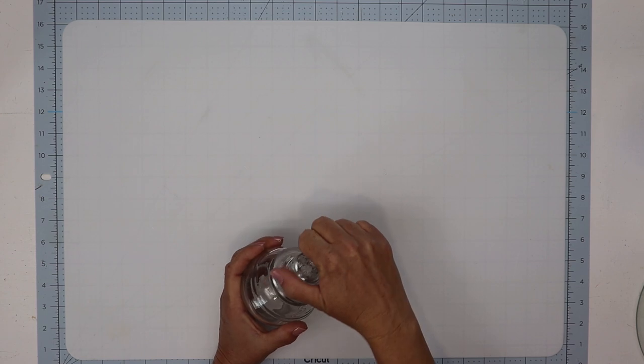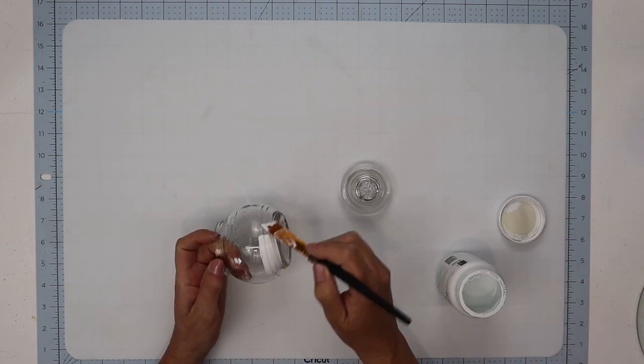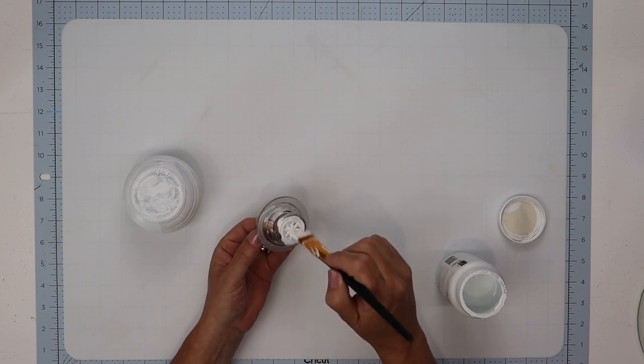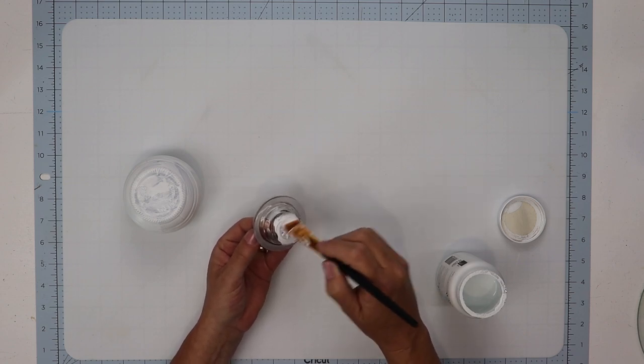Using a glass canister from Dollar Tree. Now you could spray paint this white. The weather was not permitting in my area that day, so I gave this two coats of white chalk paint.